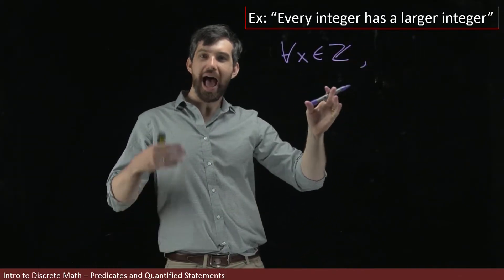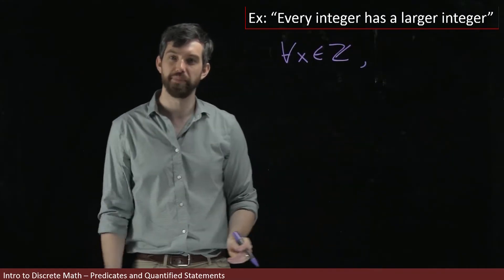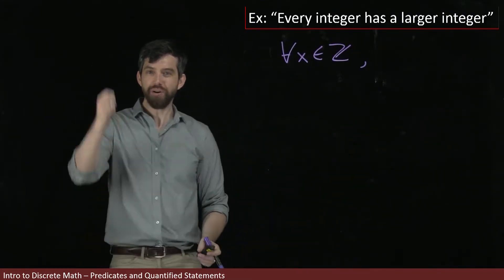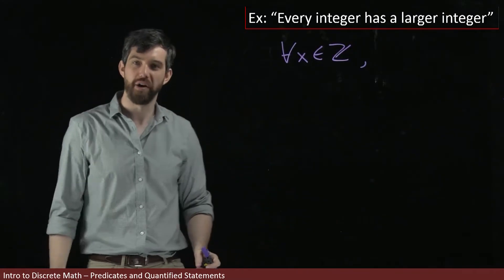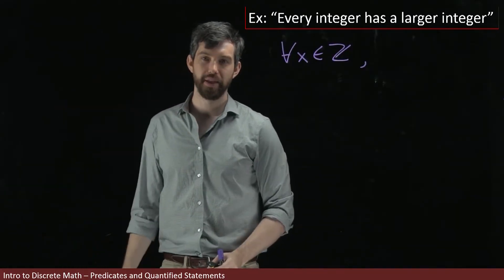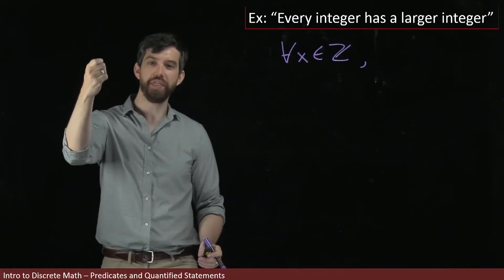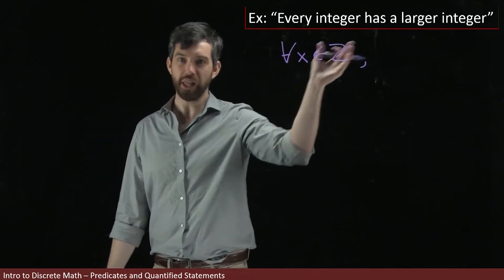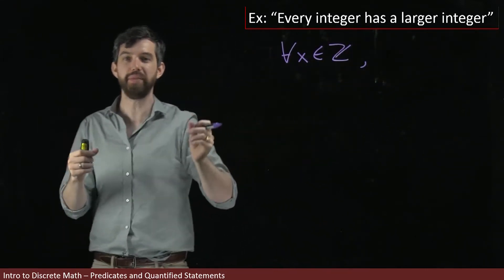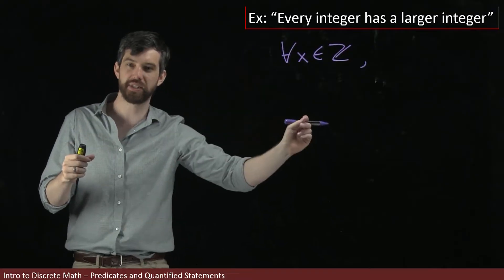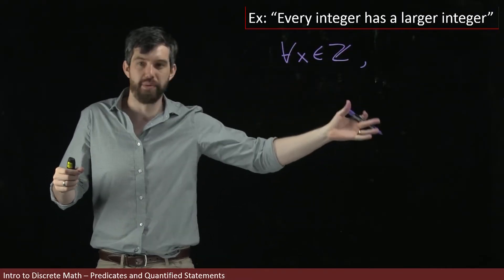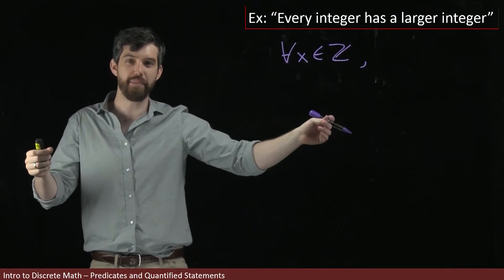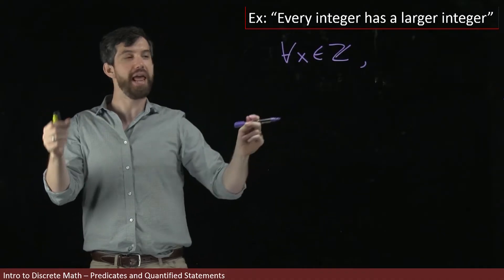The claim that has a larger integer means that there is some other value out there, maybe a y, that is going to be bigger than my x. So in other words, if I start with some x over here, the claim that there's a larger integer is the claim that there exists some other number, maybe I'll call it y, there exists some other number that is bigger than x.